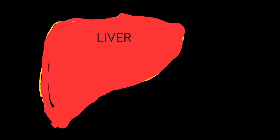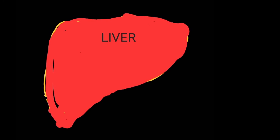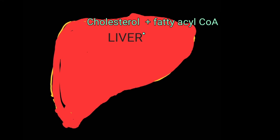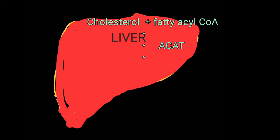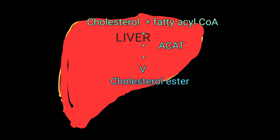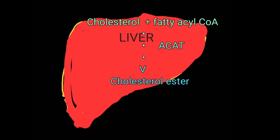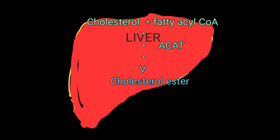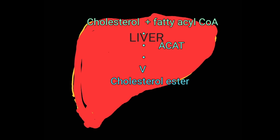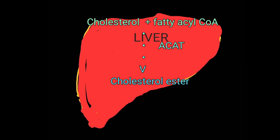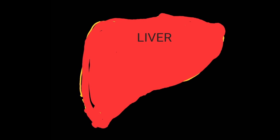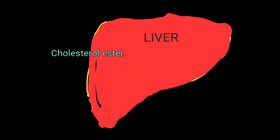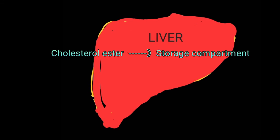The third important function of the liver in terms of cholesterol storage is that it has an enzyme abbreviated ACAT — acyl-CoA cholesterol acyltransferase — which is the enzyme responsible for converting free cholesterol into cholesterol esters. Cholesterol esters, once formed, can be packaged and stored in the liver in special storage vesicles. ACAT can therefore contribute to the reduction of free intracellular cholesterol within the liver.